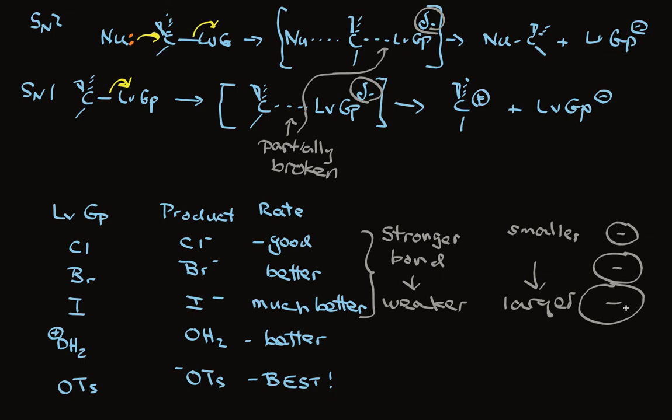The ability to accommodate charge, this partial charge on the leaving group in the transition state, is correlated with how big it is. The bigger volume the ion has to spread out negative charge, the more stable that negative charge is.